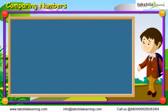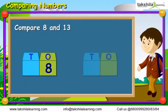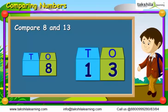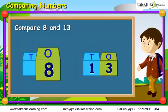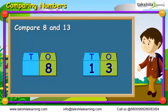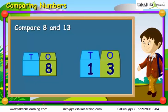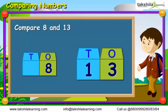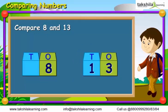Similarly, if we compare 8 and 13, let us place the numbers as shown. 13 is the bigger number as compared to 8, as it has more number of digits.